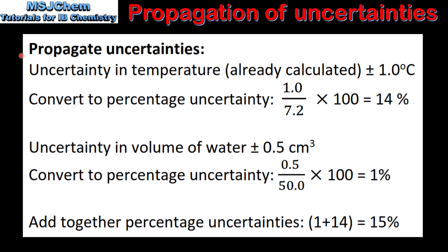Next we will propagate the uncertainties. The absolute uncertainty in the temperature is ± 1.0°C. To convert to percentage uncertainty, we divide the absolute uncertainty by the measured value and multiply by 100, which gives us 14%. The absolute uncertainty in the volume of the water is ± 0.5 cm³, so converting to percentage uncertainty gives us 1%.